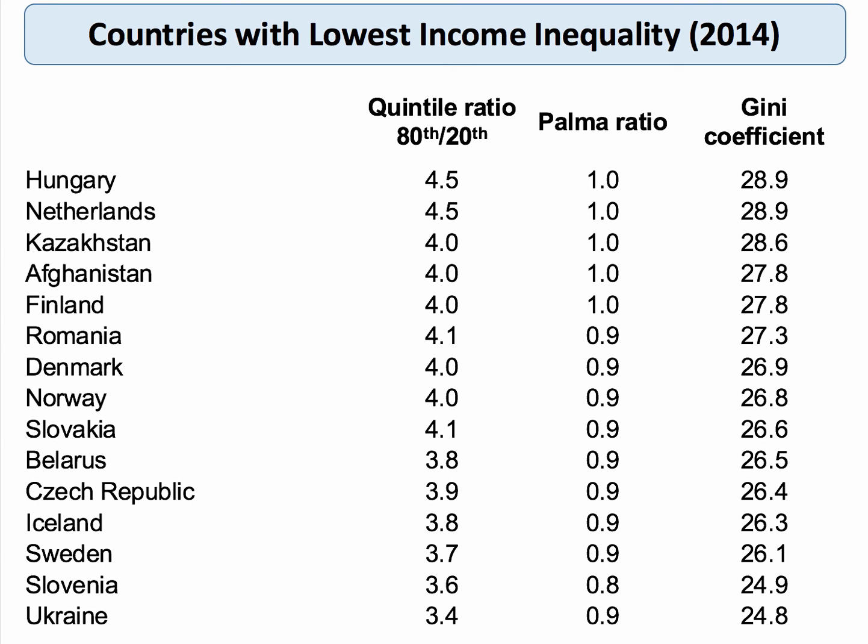Now the countries with the lowest income inequality — all of these countries have a quintile ratio below 5, as shown in this table. The country with the lowest income inequality in 2014 was Ukraine, an upper-middle income country, with a quintile ratio of 3.4 and a Palma ratio of 0.9. All of these countries have a Palma ratio of one or less and a Gini coefficient very low by international standards — around 24.8. These countries include Belarus, Ukraine, Romania — not always low income, not always super high income countries — but according to the published data, these have the lowest income inequality.